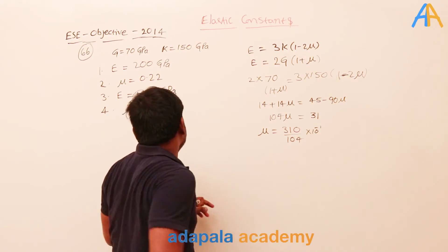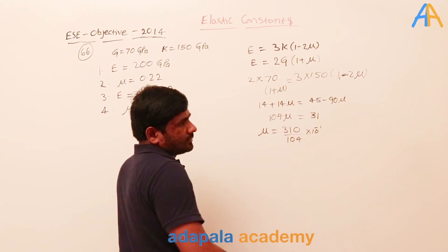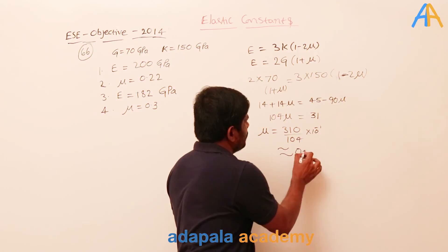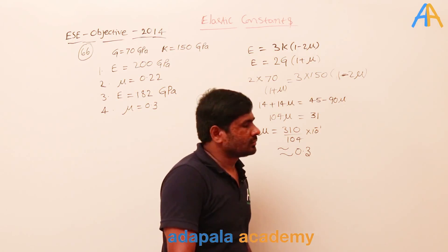So the value is nearer here - one value is 0.22, another is 0.3. I can directly take this as 0.23 for μ value, because 0.22 is nearer to it. This is the μ value.